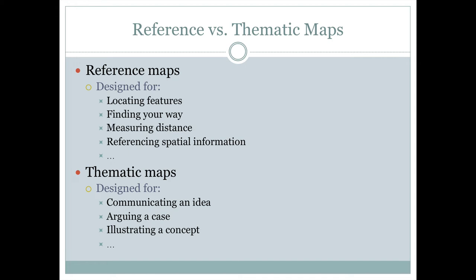Let's talk about the difference between a reference map and a thematic map. Reference maps are designed to find things or to help you locate things. They can be used for things like locating features, finding your way from one point to another, measuring the distance along such lines, or just referencing spatial information — telling you where something is.